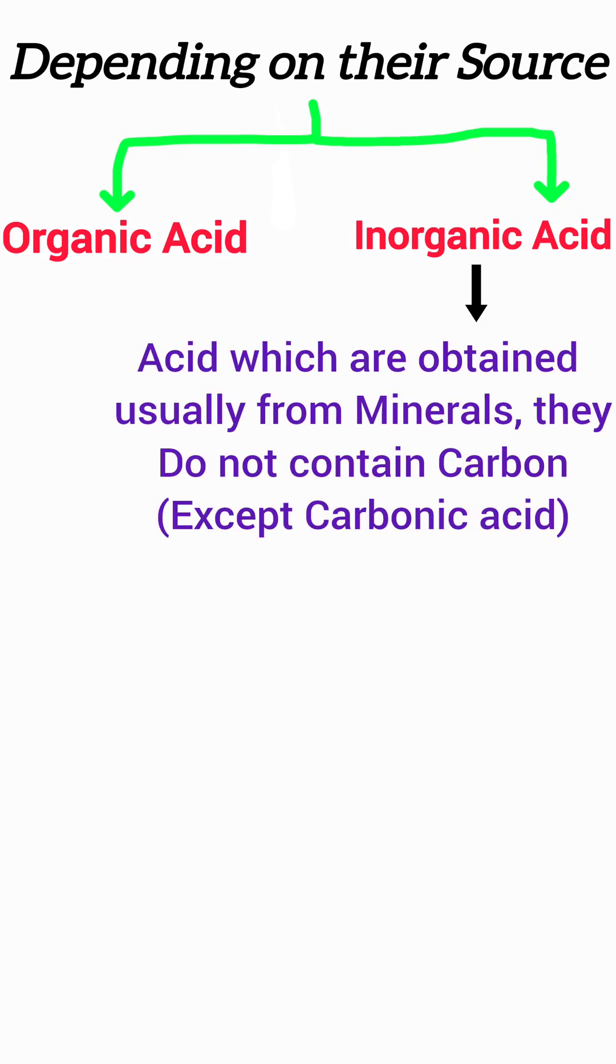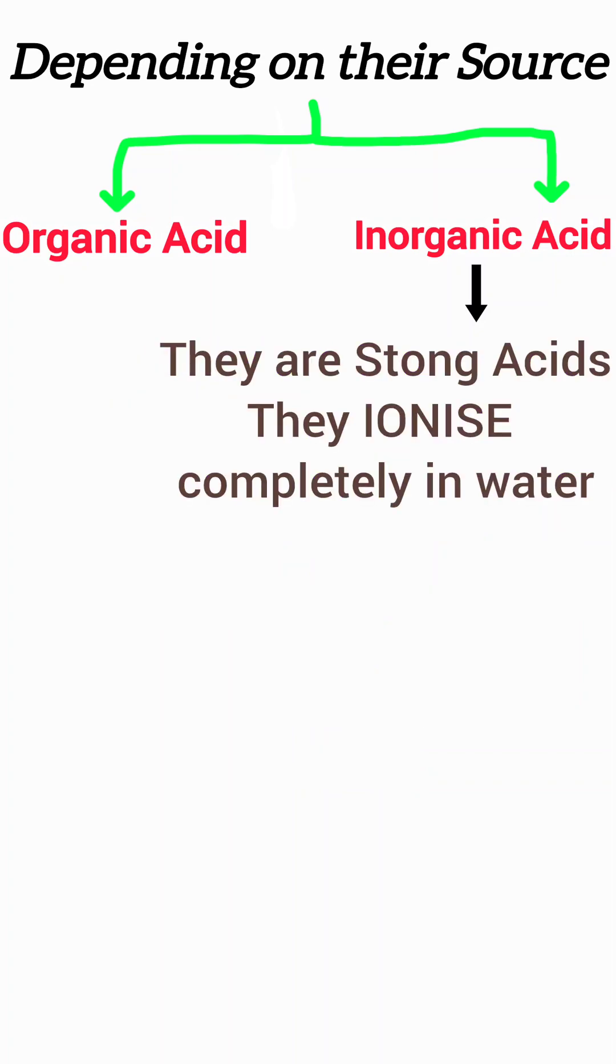Inorganic acids are acids which are obtained usually from minerals. They do not contain carbon except carbonic acid, H2CO3. For example, hydrochloric acid, sulfuric acid, and nitric acid. They are strong acids. They ionize completely in solution.